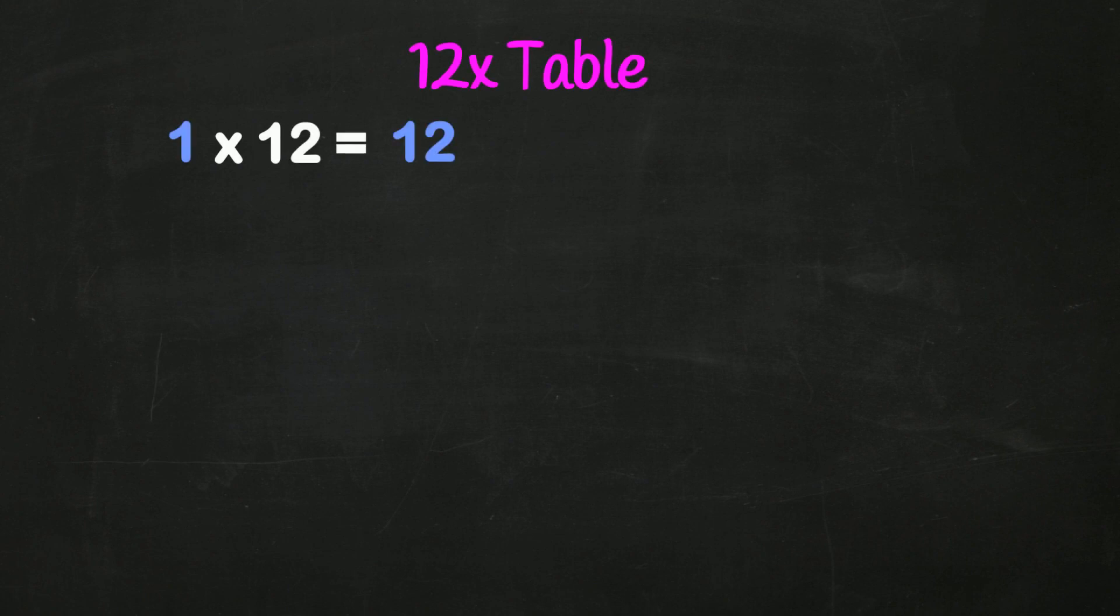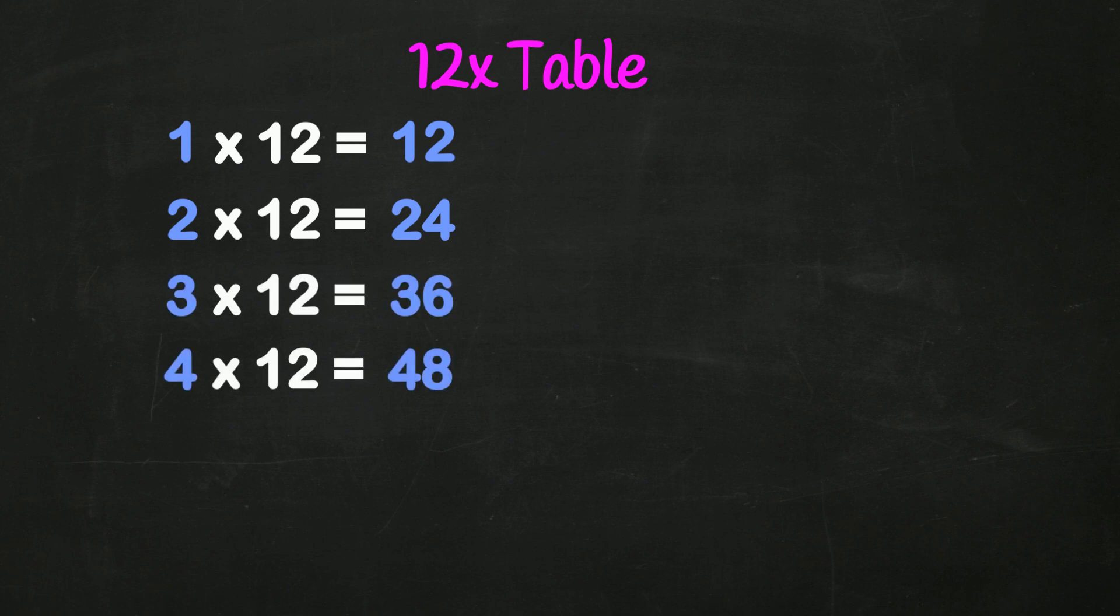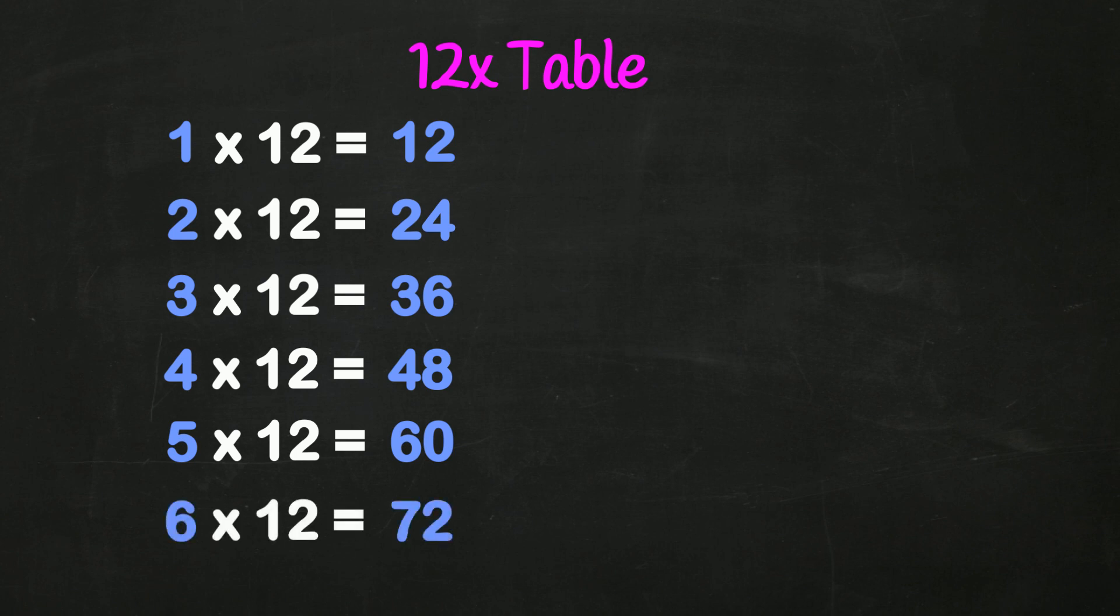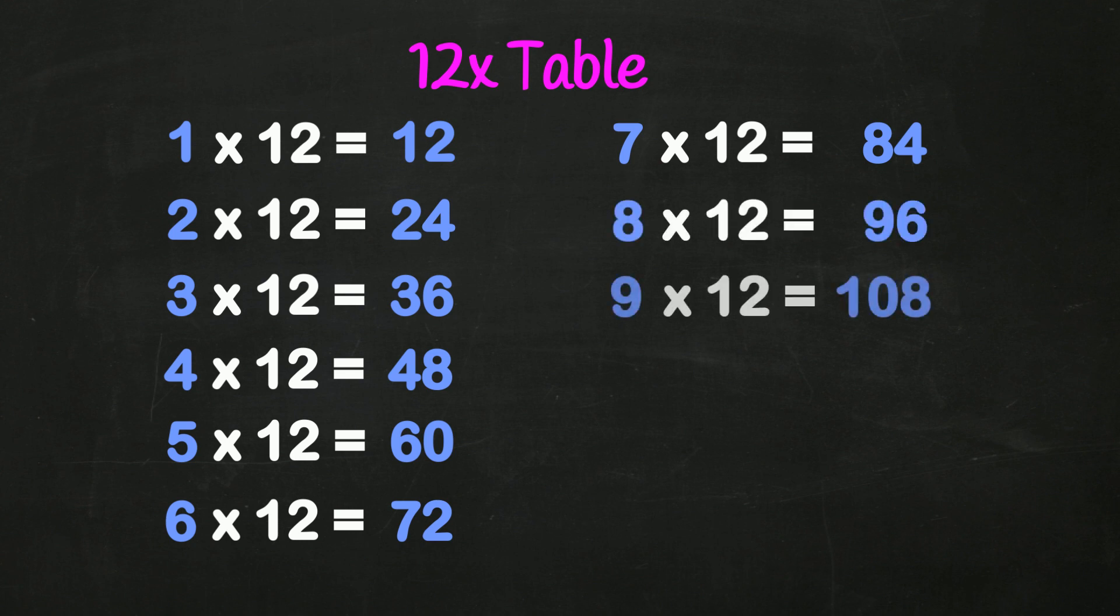1 12 is 12, 2 12s are 24, 3 12s are 36, 4 12s are 48, 5 12s are 60, 6 12s are 72, 7 12s are 84, 8 12s are 96, 9 12s are 108, 10 12s are 120.